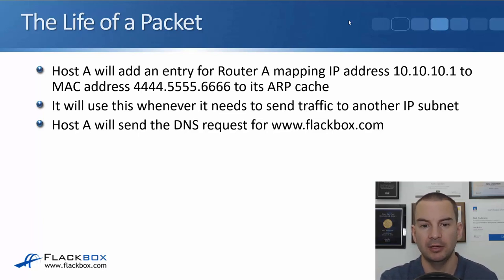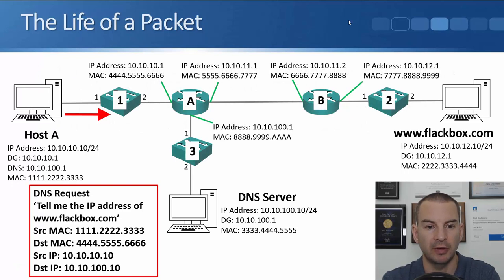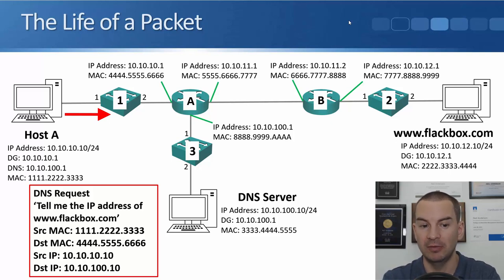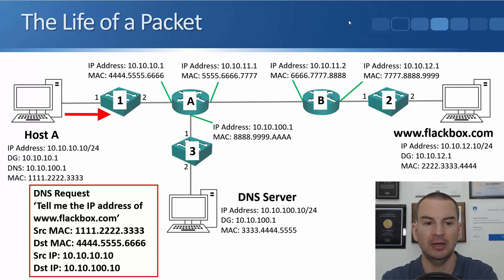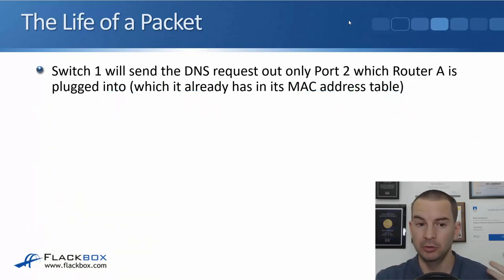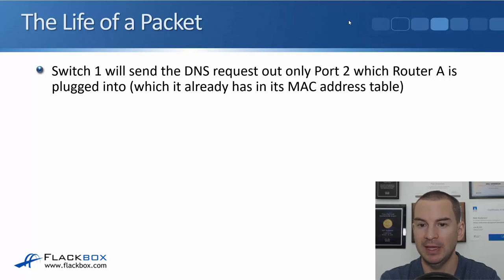Host A then sends the DNS request for www.flackbox.com, asking for its IP address. It comes from source MAC 1.2.3 going to Router A's default gateway MAC 4.5.6. The source IP is 10.10.10.10 and the destination IP is the DNS server at 10.10.100.10. This is unicast traffic, so Switch1 sends the DNS request out only port 2 where Router A is plugged in, which it already has in its MAC address table.